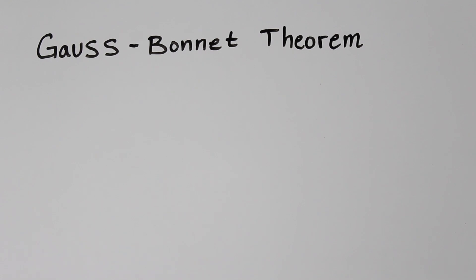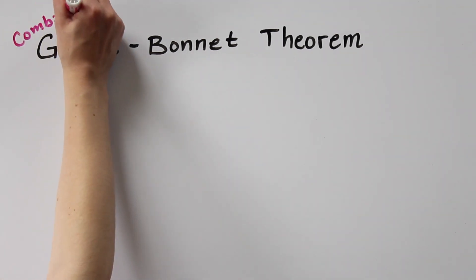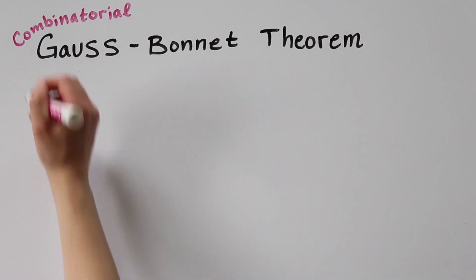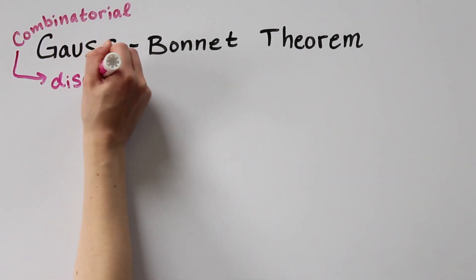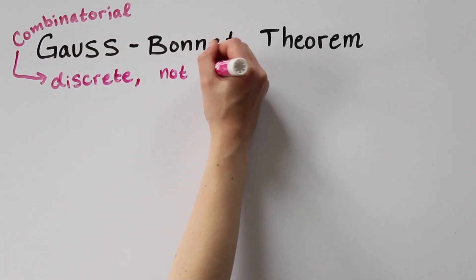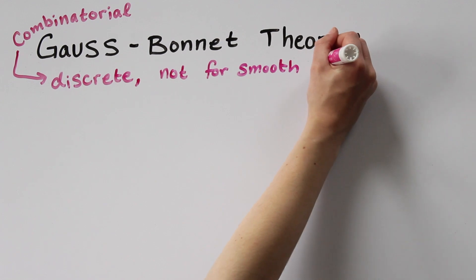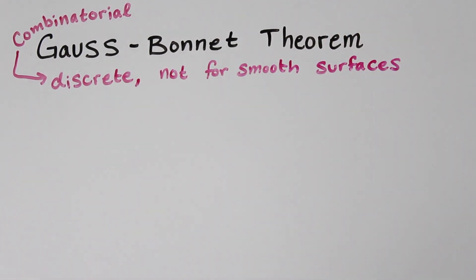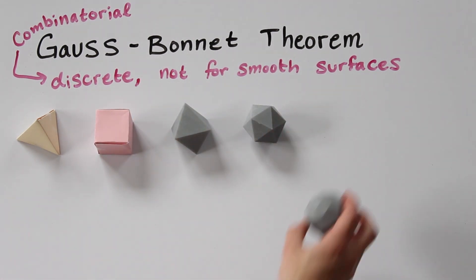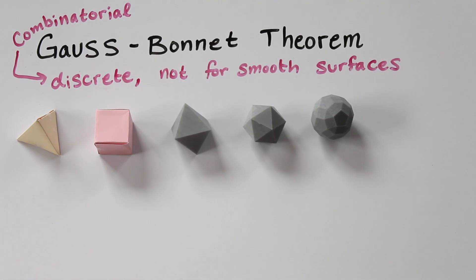So what we've learned today is the Gauss-Bonnet theorem, but it's the combinatorial version. The word combinatorial is referencing the math subject of combinatorics. You can think of this as meaning discrete in some sense. This is the combinatorial version of the Gauss-Bonnet theorem because it is about polyhedral surfaces, those with flat sides and corners.